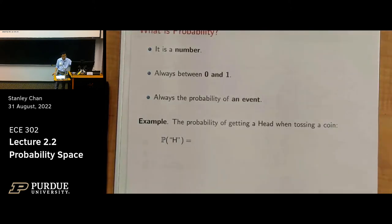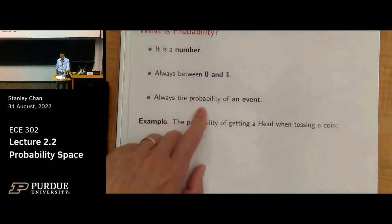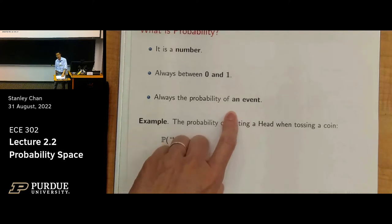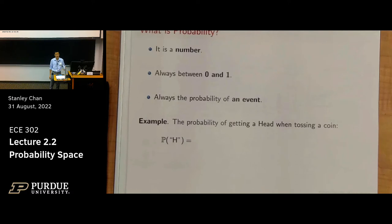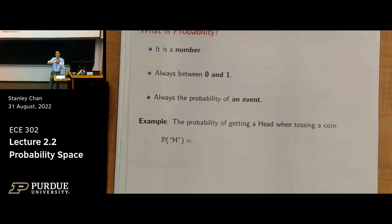Probability is a number — a number between zero and one — and it's always the probability of an event. Probability can be objective: for example, you throw a die or flip a coin. You can count the frequency, and imagining infinitely many flips, half the chance you get heads and half the chance you get tails. This is the frequentist approach.